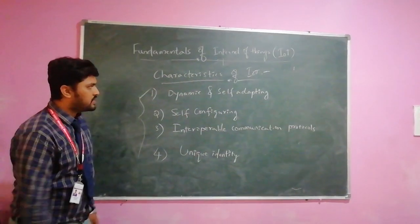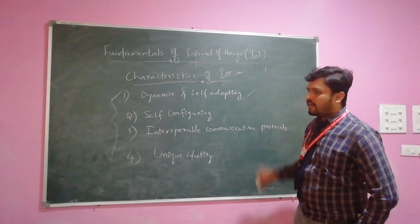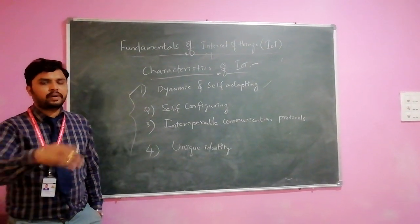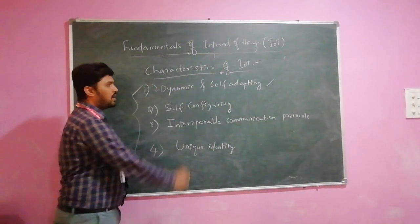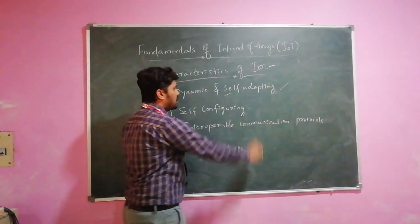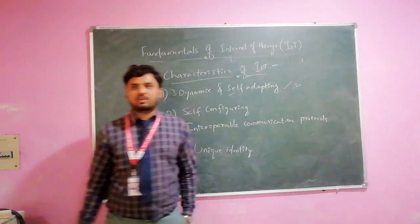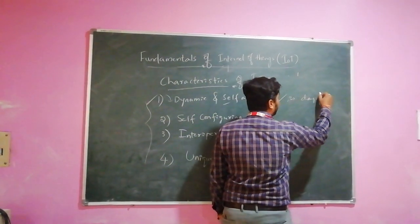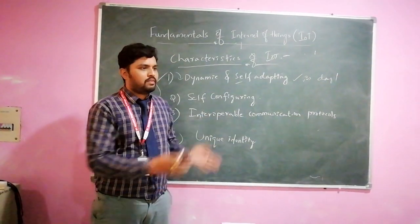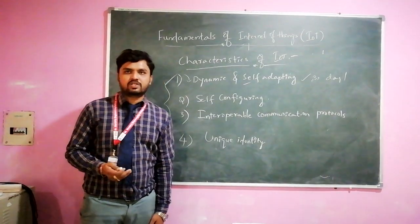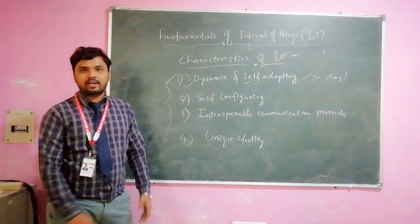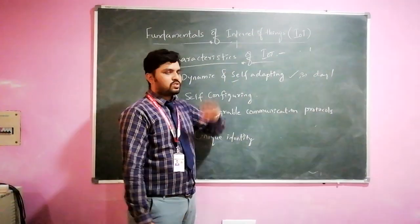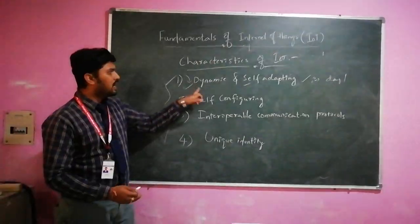First, dynamic and self-adapting. IoT devices have a self-adapting capability — if any changes happen in the environment, operating conditions, or sensor environment, the device will dynamically adopt those changes. A better example is a surveillance camera system, which operates in changing conditions — day and night. For example, if a person is moving in front of the camera, the resolution may decrease, and accordingly our IoT devices should be able to adapt. It has the capability of adapting to changes in environmental or operating conditions.